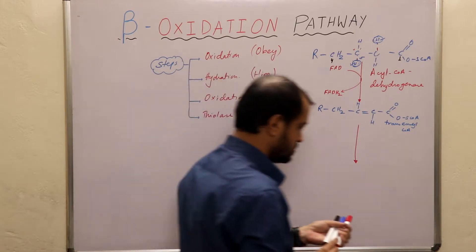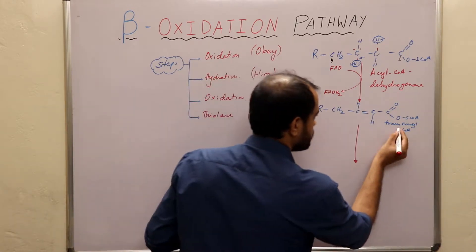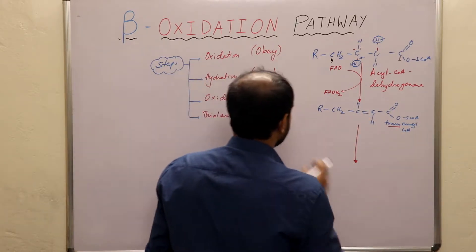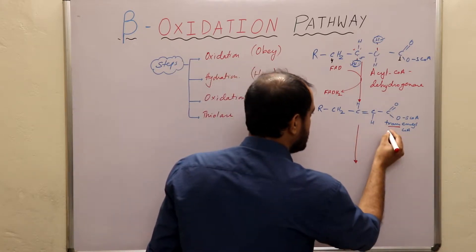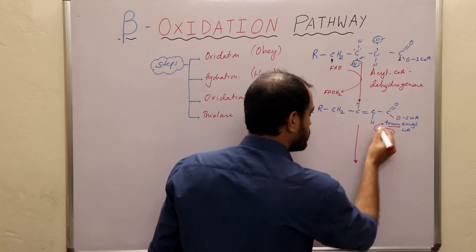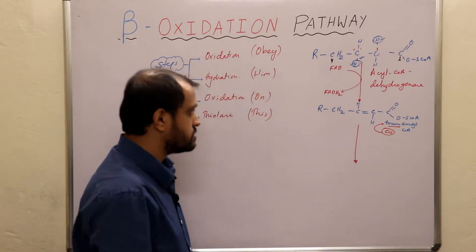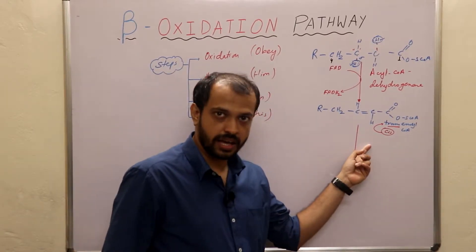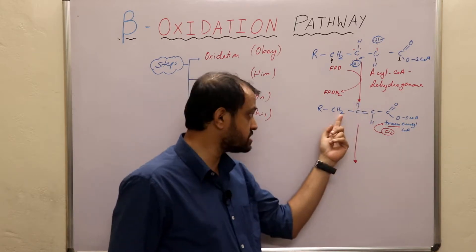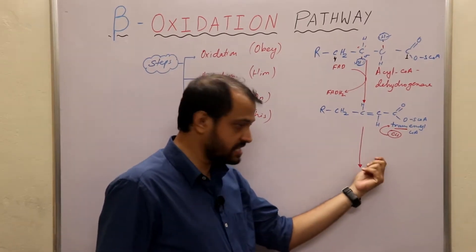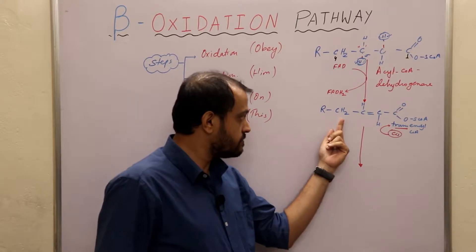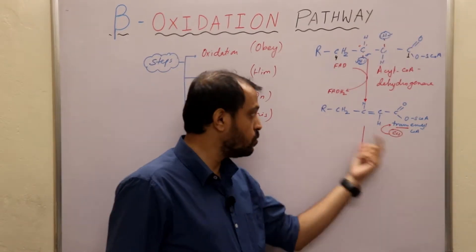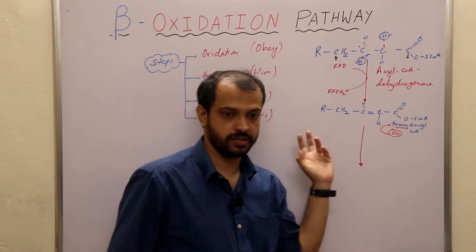Why is it always trans? If there is a cis product, it is again converted into trans-enoyl-CoA. The reason is that the second enzyme which will act on this substrate only works when there is trans-configuration in this particular substrate.